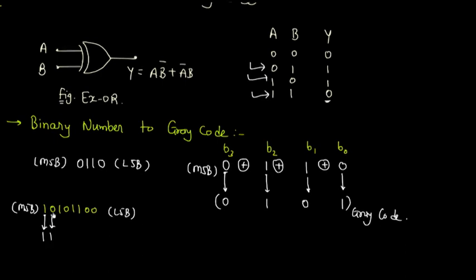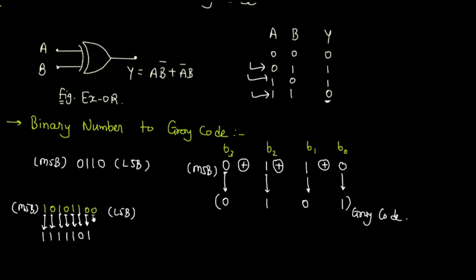Write 1 here. If we use XOR between 0 and 1, both inputs are different, so we get 1. In the next pair, bits 1 and 0 are different, so output is 1. In the following pair, inputs are different, so output is 1. In the next pair, both inputs are same, so output is 0. In the next pair, inputs are different, so output is 1. In the final pair, both inputs are same, so output is 0. This is the grey code.